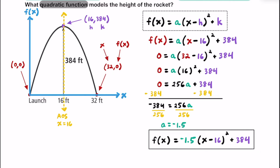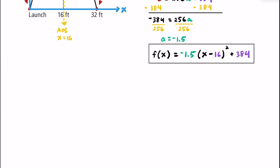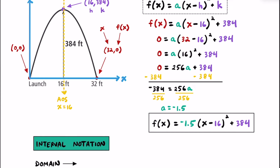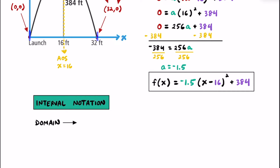Just for a little extra credit, let's talk about some intervals. Starting with the domain: notice how the leftmost point is 0 and the rightmost point is 32. So we're going to write the domain with a bracket on 0 and a bracket on 32, since x can be 0 and the function includes 32 as well — giving us [0, 32].